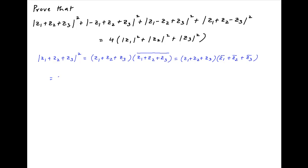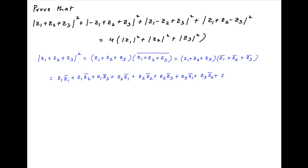Opening this up, we get z1 times the conjugate of z1, plus z1 times the conjugate of z2, plus z1 times the conjugate of z3, plus z2 times the conjugate of z1, plus z2 times the conjugate of z2, plus z2 times the conjugate of z3, plus z3 times the conjugate of z1, plus z3 times the conjugate of z2, plus z3 times the conjugate of z3.